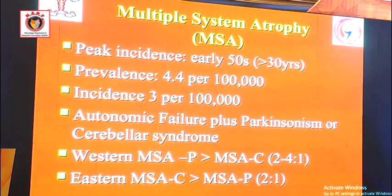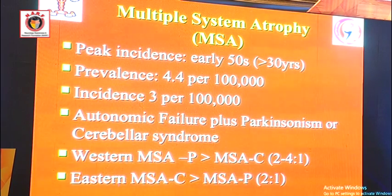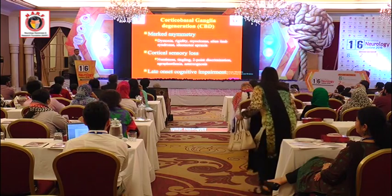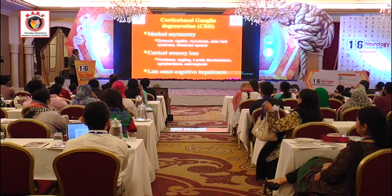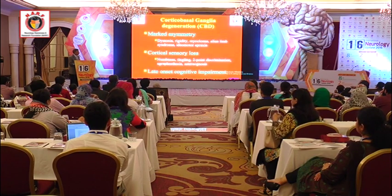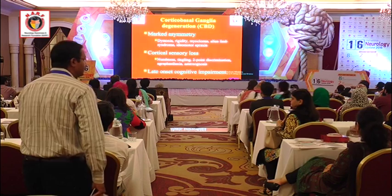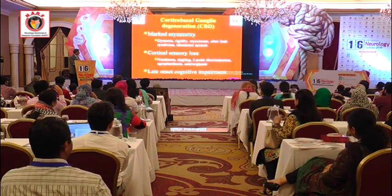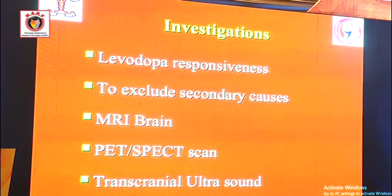MSA is younger in onset, occurring any time after 30, usually in the 50s, with autonomic failure plus evidence of Parkinsonism or cerebellar signs. Western MSA has more Parkinsonian features than Eastern MSA. For corticobasal degeneration, another atypical Parkinsonism, you have marked asymmetry, myoclonus, rigidity, alien limb syndrome, and cortical sensory loss is very important for diagnosis, with late-onset cognitive impairment.